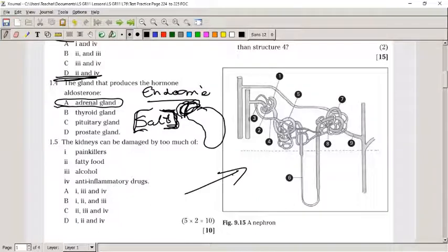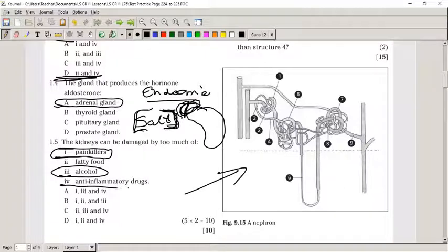1.5: The kidneys can be damaged by too much of: painkillers - yes; fatty foods - possibly; alcohol - yes, definitely; and anti-inflammatory drugs. The most likely ones over here are 1, 3, and 4. So the correct answer for 1.5 should be A.